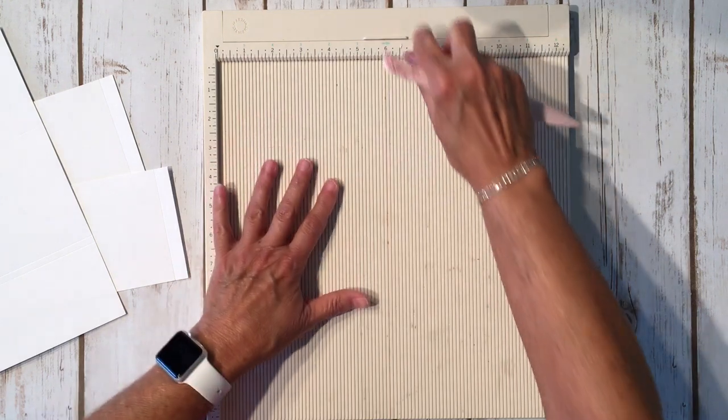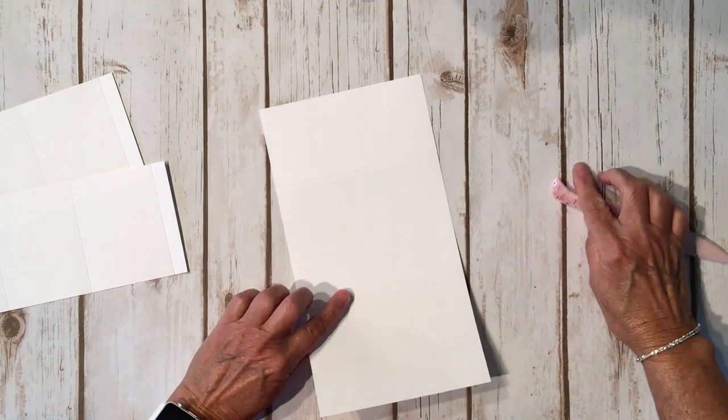So you have two of those and then we have our base piece. So then what you want to do is move this out of the way and go ahead and fold on your score lines.